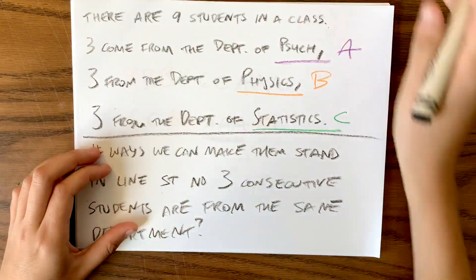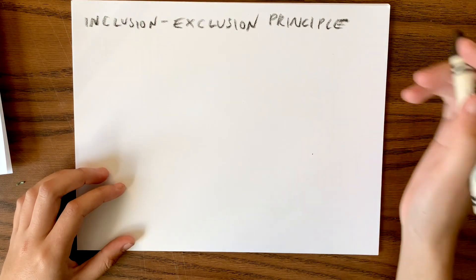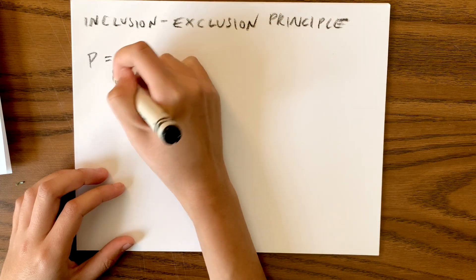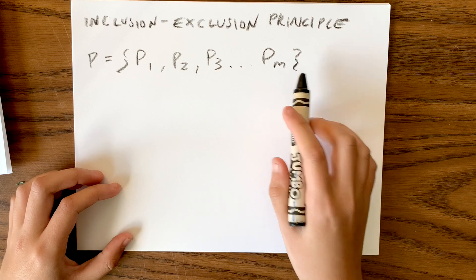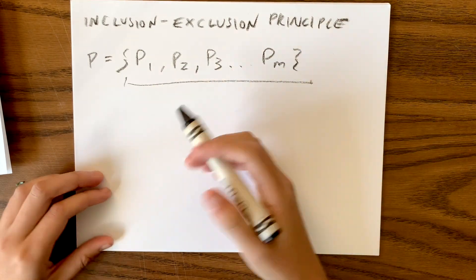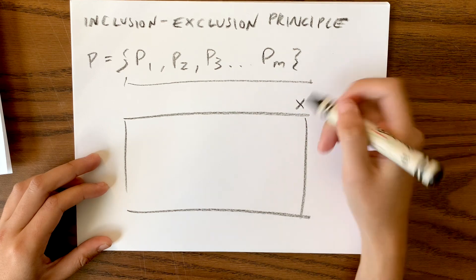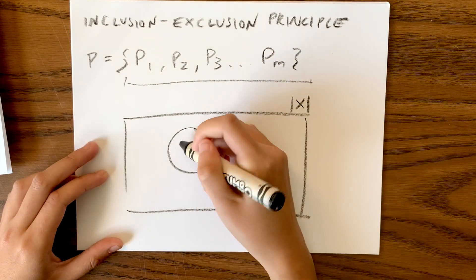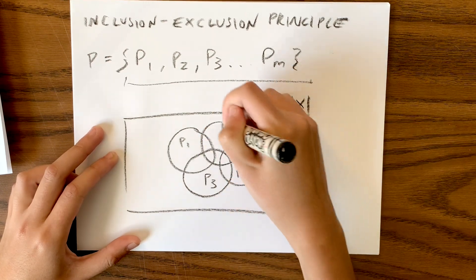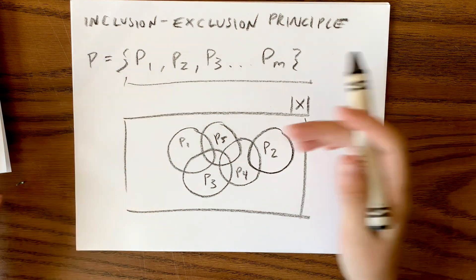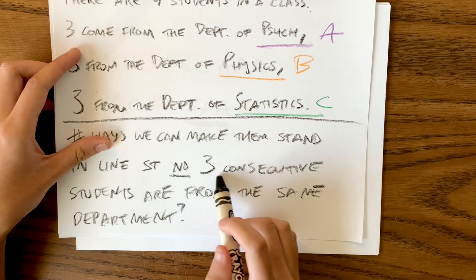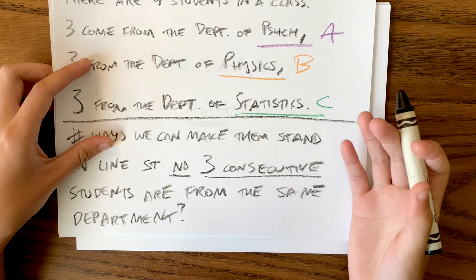So let's talk about the inclusion-exclusion principle. If we define some properties — a set of characteristics we can call set P — and these properties represent what we do not want in our final solution, then we can take different combinations of these properties and subtract them from our total set. So our sample space, let's call it X, has some size, and we define properties P1, P2, P3, and so on — some of which may overlap. We can find these properties and then exclude what we don't want from our final solution.